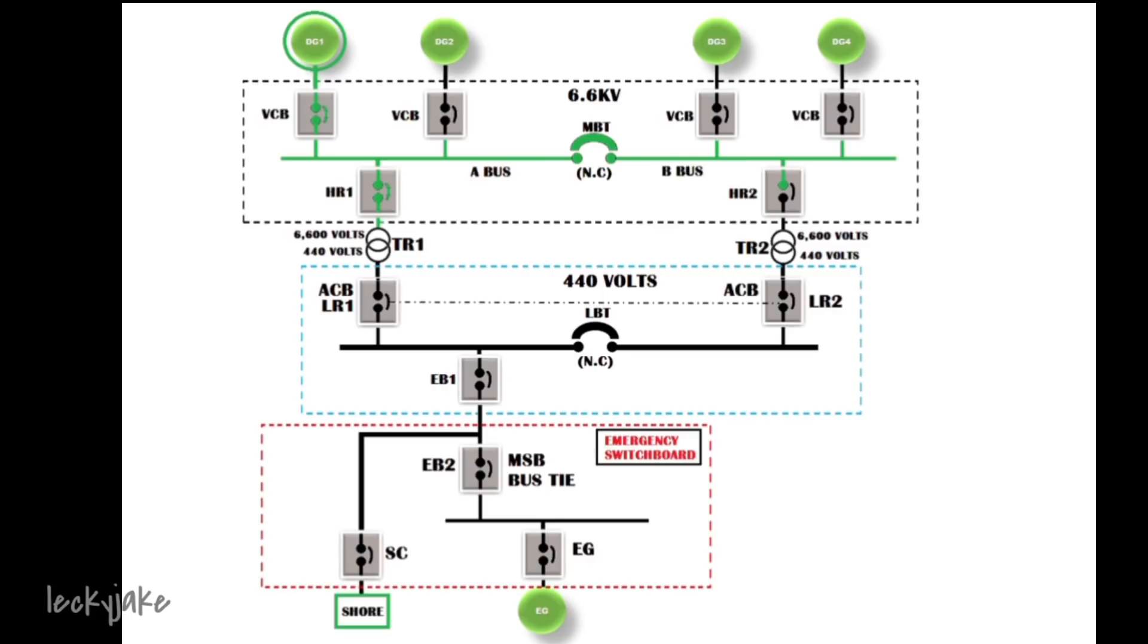Suppose that we decided that transformer number one will be our running transformer, then we need to close the HR1 and we will close the ACB LR1. Take note that the ACB LR1 and HR1 has an interlock with each other. This means that if the LR1 will be opened, then the HR1 will also be opened.